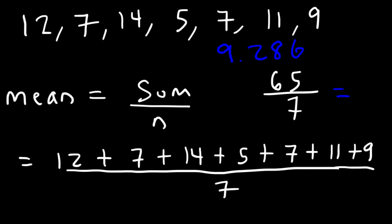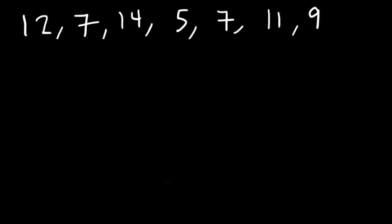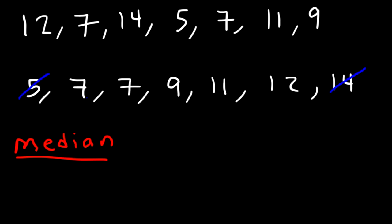Now what about the median? How can we calculate the median of this data set? To find the median, it's going to help if you arrange the numbers in increasing order. The lowest number is 5, and then we have two 7s, next we have a 9, 11, 12, and 14. In order to find the median, we need to find the middle number. The best way is to eliminate the first and last number, then the second and second-to-last, then the third from each end. The one in the middle is the median. So in this example, the median is equal to 9.